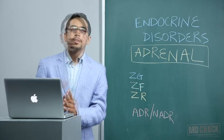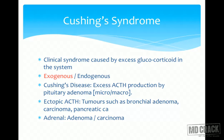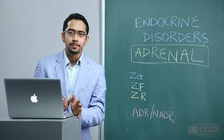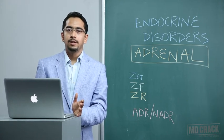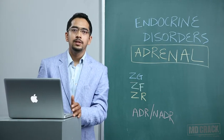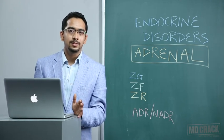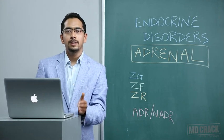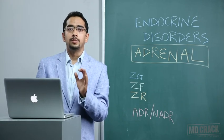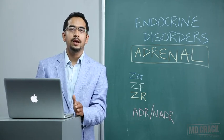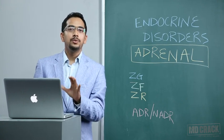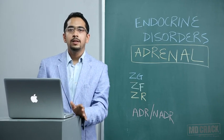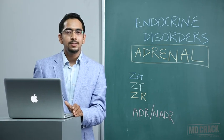Coming to individual lesions — Cushing's syndrome is the clinical presentation where we have excess glucocorticoid in the body. This may be produced endogenously due to a problem in the pituitary or adrenal, or more commonly it may be exogenous glucocorticoid intake. The most common cause of Cushing's syndrome is exogenous steroid intake, for example steroid therapy for autoimmune disorders or nephrotic syndrome. If exogenous is not an option, in adults the most common endogenous cause is Cushing's disease — a pituitary tumor.